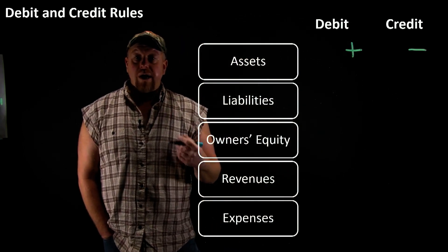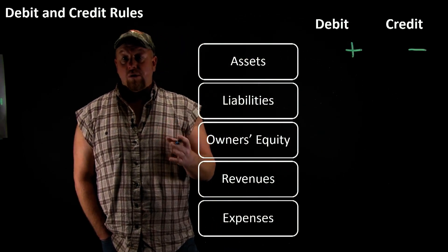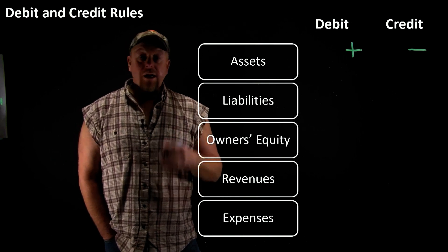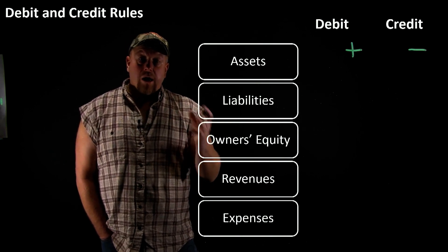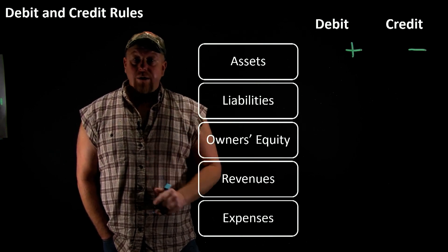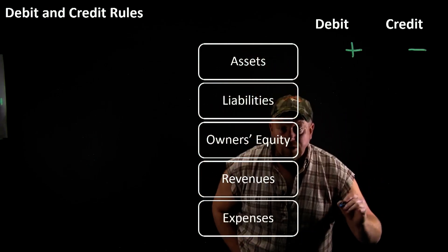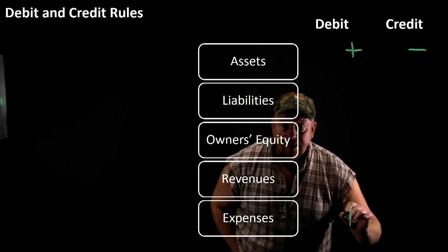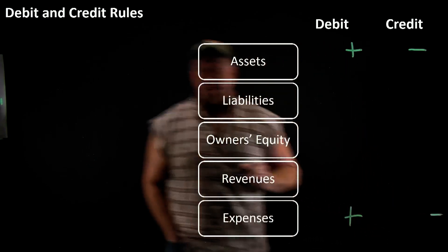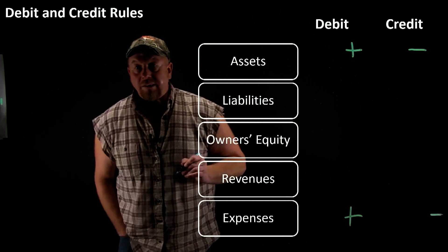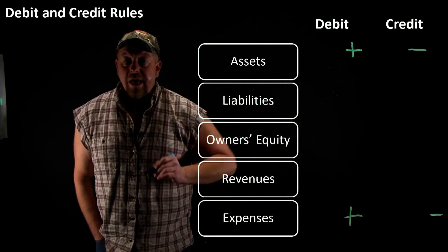Now let's say you got something else like inventory — that's going to be the same way. Now then you got your expenses; you're spending them bucks. Those do the same thing as the assets. It ain't more simple than that.